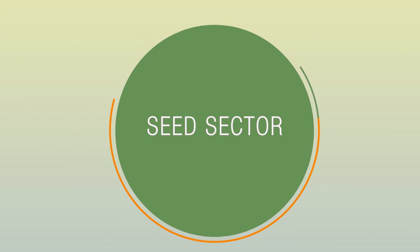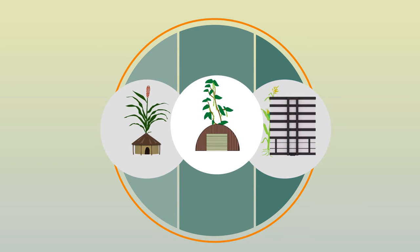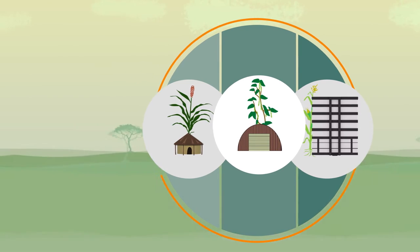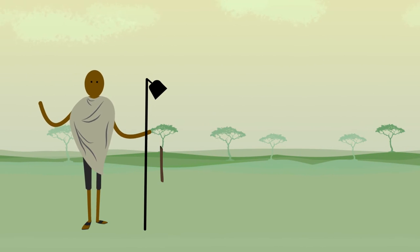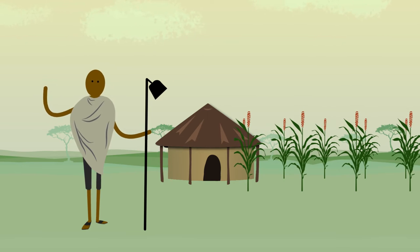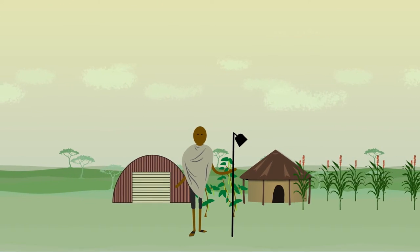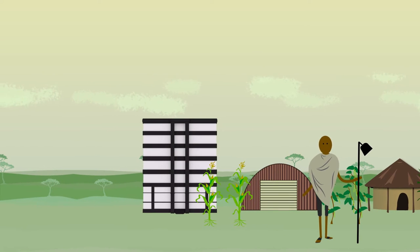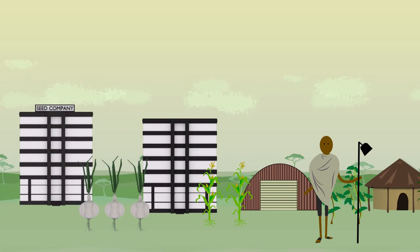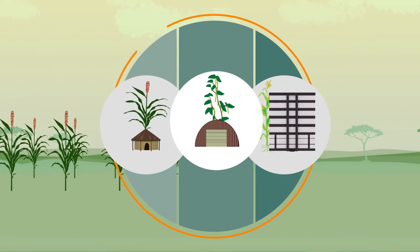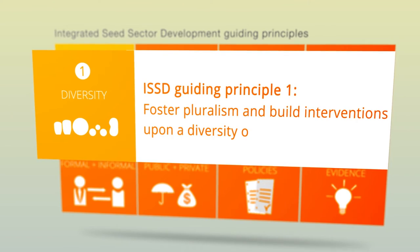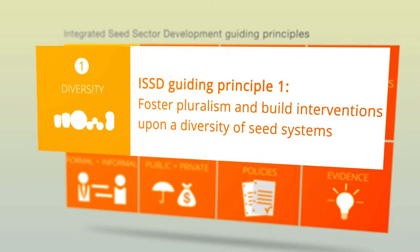The ISSD approach acknowledges the coexistence of multiple seed systems. Farmers gain access to seed from different seed sources or systems. A farmer may, for example, save his or her own seed of sorghum, buy bean seed from a seed producer cooperative, buy maize seed from a national seed enterprise, or buy onion seed from an international company. ISSD recognises the value of each seed system and fosters pluralism.